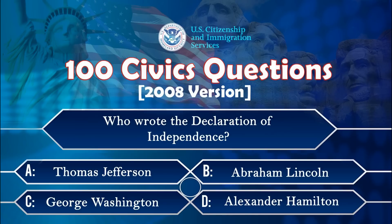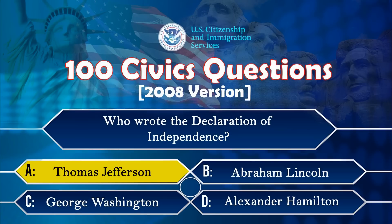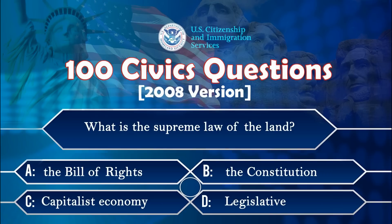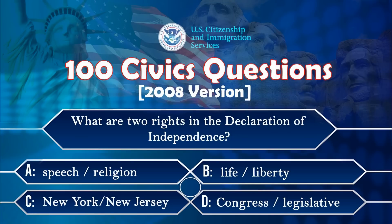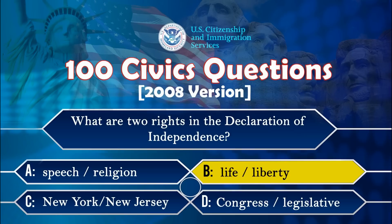Who wrote the Declaration of Independence? Thomas Jefferson. What is the supreme law of the land? The Constitution. What are two rights in the Declaration of Independence? Life, liberty.